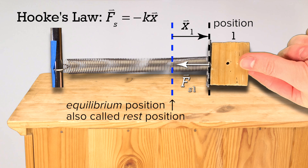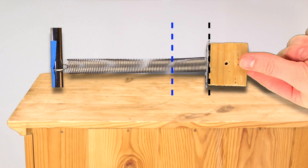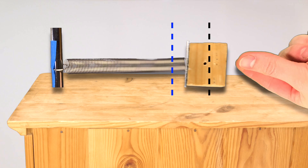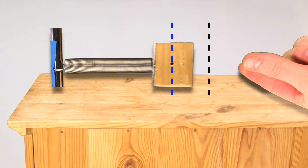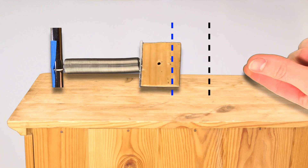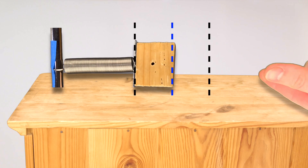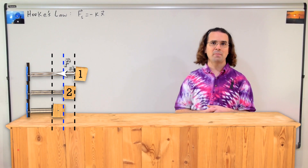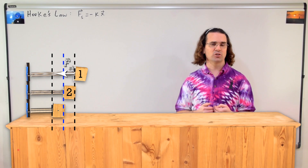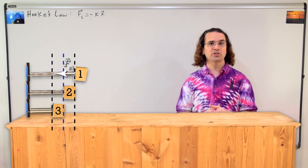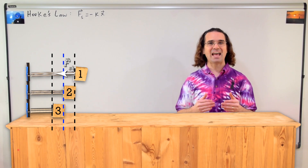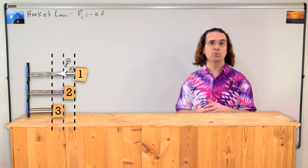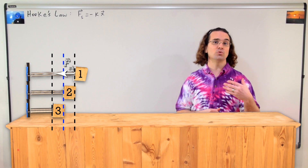Now we can let go of the mass and watch as the mass is accelerated to the left by the force of the spring. Notice the mass passes through rest position and will go all the way over to the left. Let's call position 2 the location of the mass when it is at equilibrium position, and position 3 the location of the mass when it is at its maximum displacement from equilibrium position to the left.